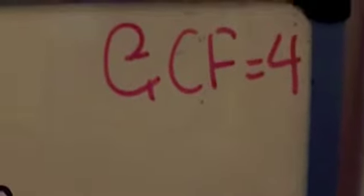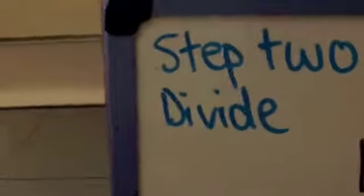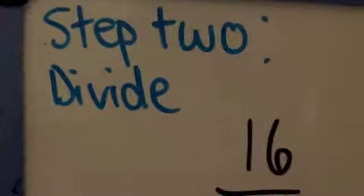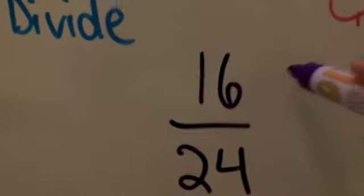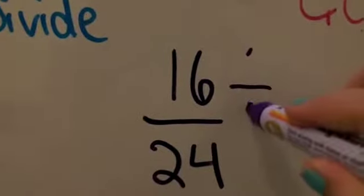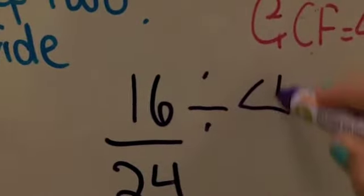Now that you have found the greatest common factor of both your numerator and your denominator, which in this case is 4, what do you do next? Well, you're going to have to use division. So you have your fraction. Divide your fraction by the greatest common factor that you found.